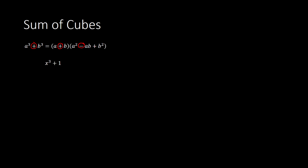Here we have x cubed plus 1. Notice we have the x being cubed, and then we have the 1 being cubed. So instead of a and b, we have x and 1. Anywhere you see an a, put an x. Anywhere you see a b, put a 1. So instead of a plus b, you'd have x plus 1. Instead of a squared, x squared. Instead of a times b, we'd have x times 1, or just 1x. Instead of b squared, we have 1 squared. So this becomes x plus 1 times x squared minus x plus 1.